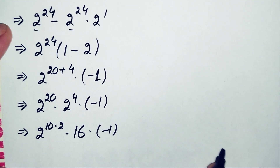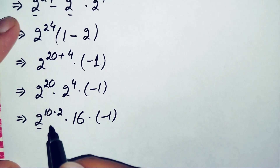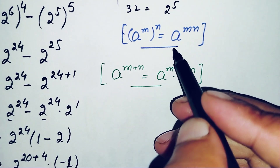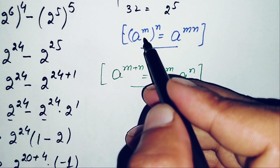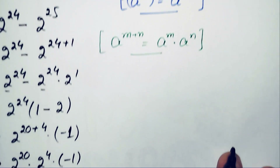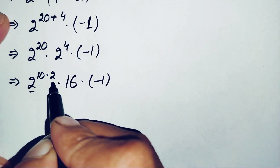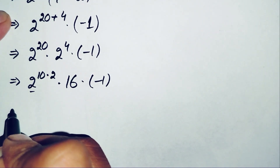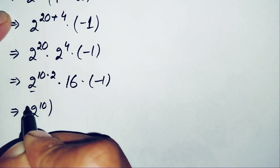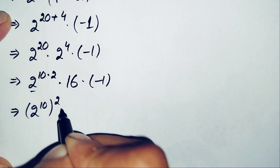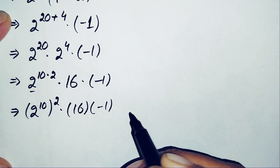Using the property a raised to power m times n equals (a raised to power m) raised to power n, we rewrite 2 raised to power 20 as (2 raised to power 10) whole square. So the expression becomes (2 raised to power 10) whole square times 16 times negative 1.